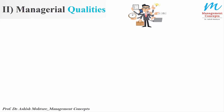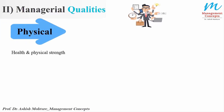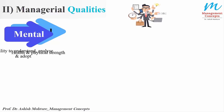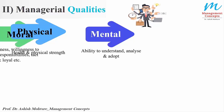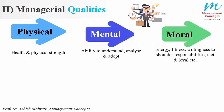The second part is managerial qualities. Henry Fayol believed that when an employee becomes a manager, they should possess certain qualities. The first quality is physical, related to health and physical strength. Second is mental — the ability to understand, analyze and adapt. A manager must have the ability to understand others and analyze situations. Third is moral, related to energy, fitness, and willingness to shoulder responsibilities.